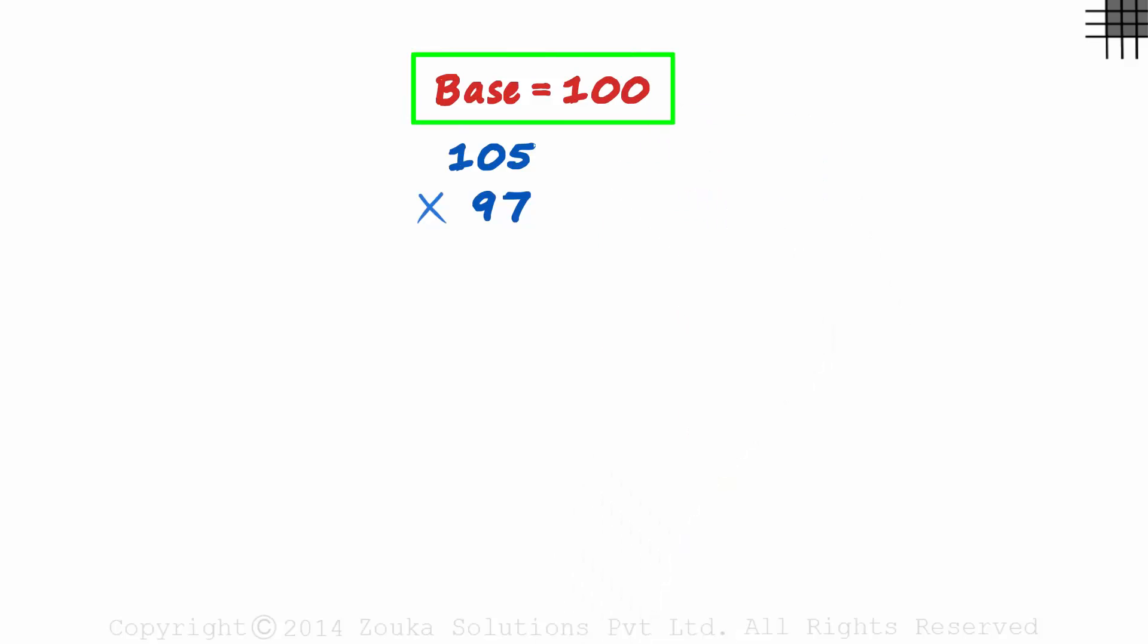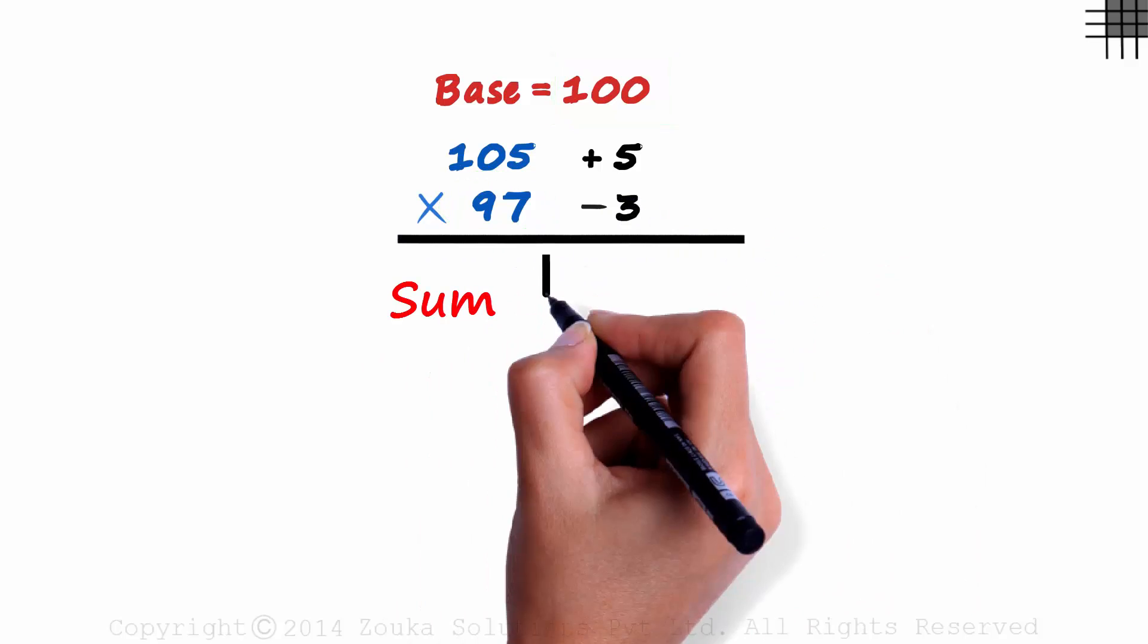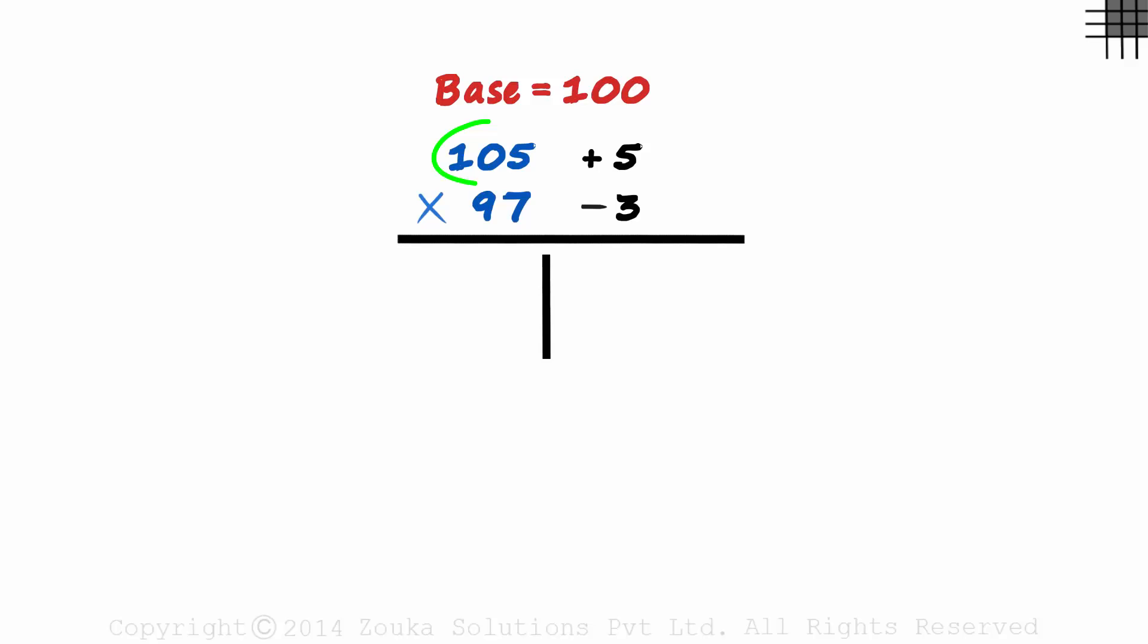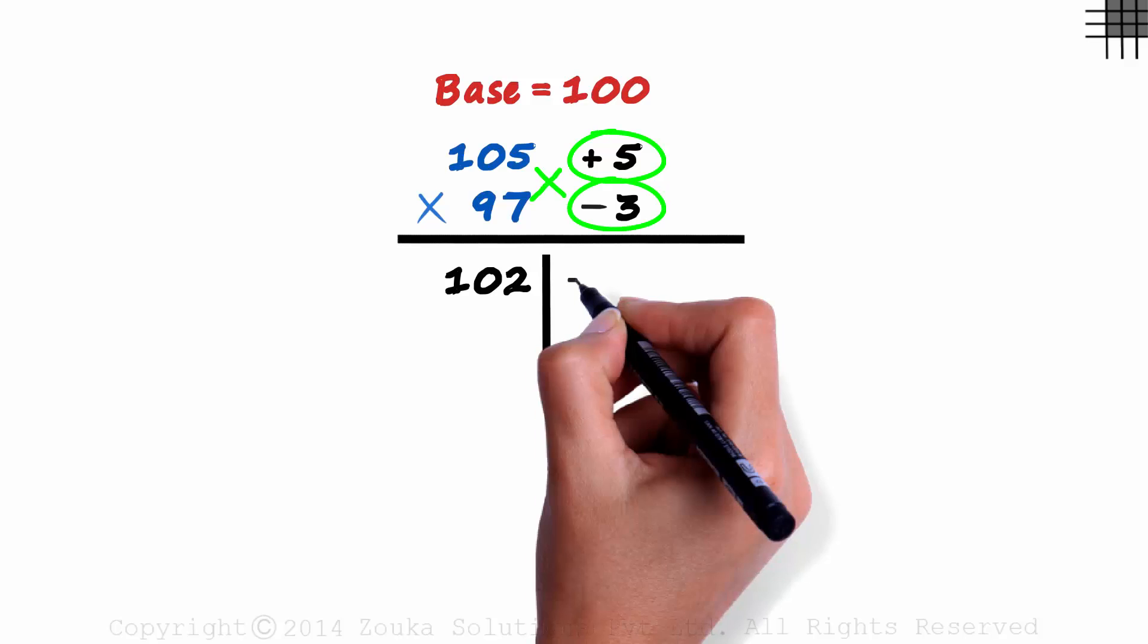Once we decide the base, we find the deviations. 105 minus 100 is 5 and 97 minus 100 is minus 3. Sum on the left and product on the right. 105 plus minus 3 is equal to 102, and 5 times minus 3 is minus 15.